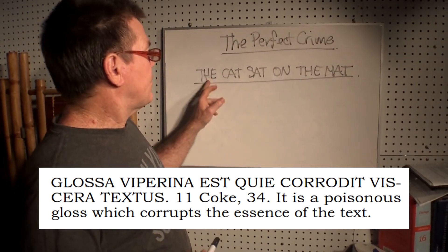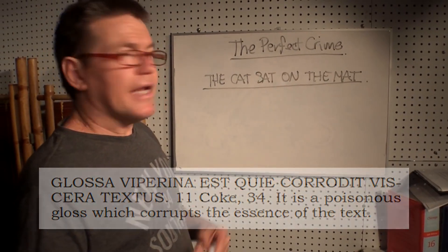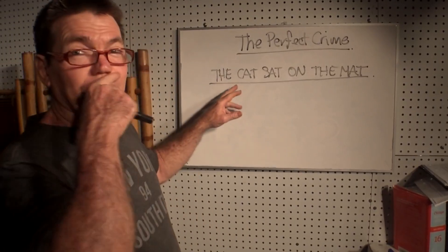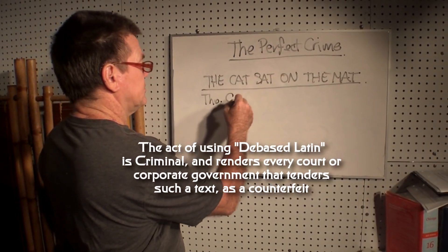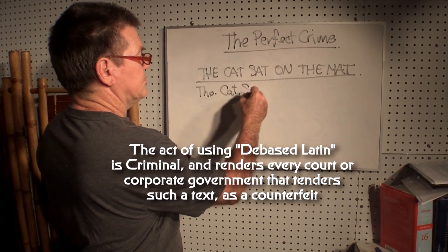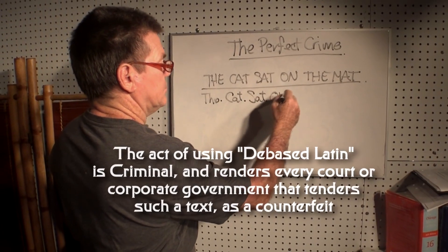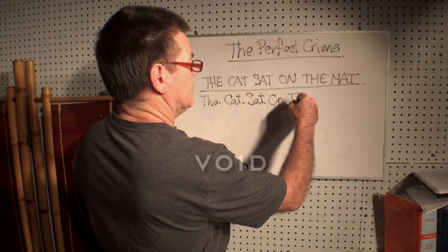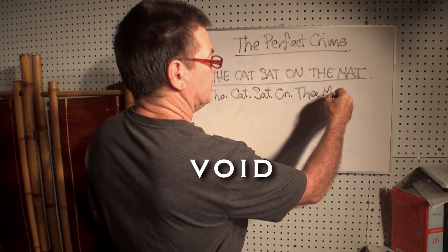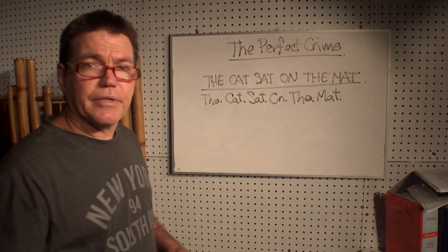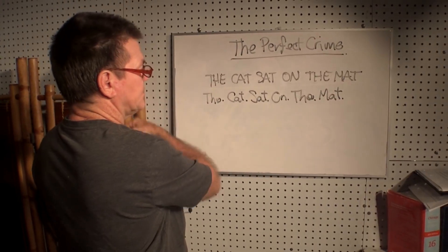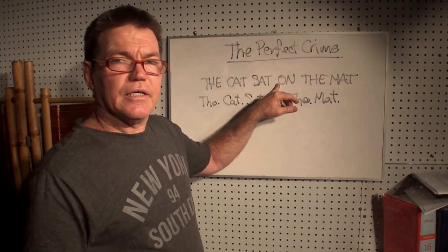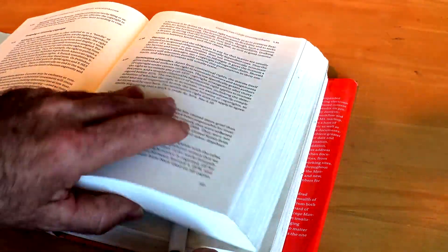Now we would assume that that would read 'the cat sat on the mat.' But in actual fact, it doesn't read that at all. Because when this typeface is translated back to English, it reads something else entirely. It's only when we know the truth of that text that we can see the lie — because the truth of that text doesn't read what you thought it did.